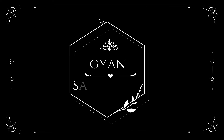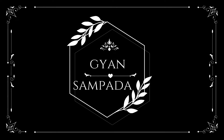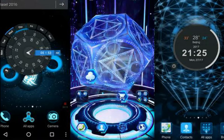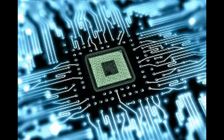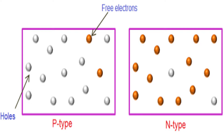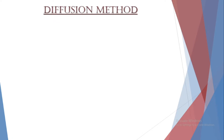Hello everyone and welcome back to my channel Gyan Sampada. In our previous class we had started a discussion on semiconductor devices, under which we studied some details about P-N junction — what it actually is, the different types of P-N junctions, and the fundamental ways to prepare a P-N junction. Out of those three principal ways, one was the diffusion method, and in today's class we will deal with this method in detail.